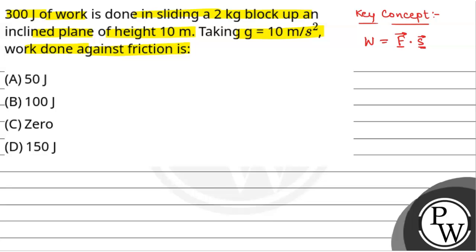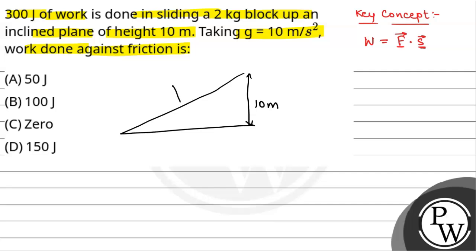We have been given an inclined plane which has a height of 10 meters. Suppose this is the inclined plane — the height is 10 meters and the block is of 2 kg mass. Let us call the perpendicular direction as the y direction and the along-incline direction as the x direction. Let the applied force F be parallel to the inclined plane, so F acts up the incline and the velocity is also in that direction.